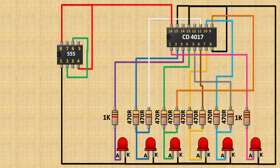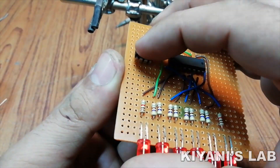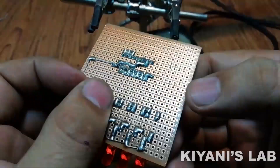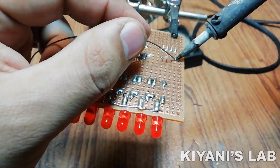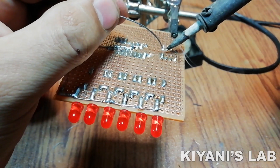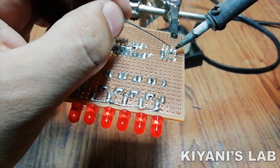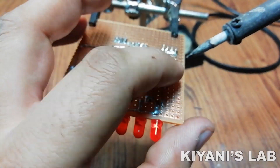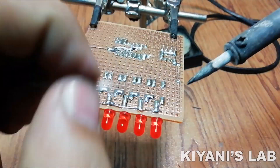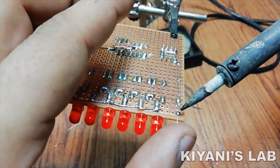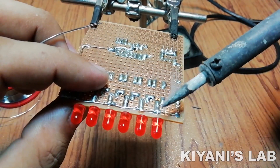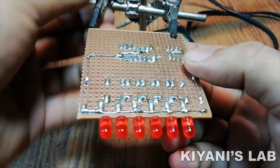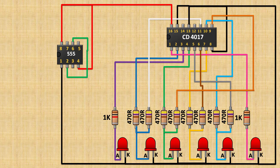Now connect the 555 timer IC — connect its pin number 4 and 8 to positive supply, its pin number 1 to ground, and connect its pin number 2 and 6 together. After that, connect a 10K resistor to pin number 8 and 7 of the 555 timer IC.